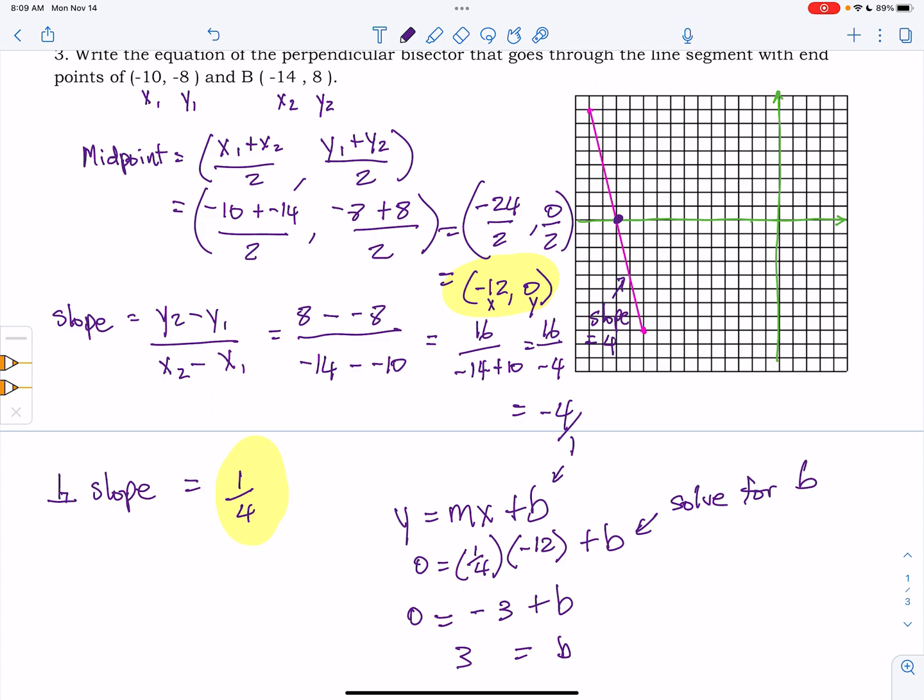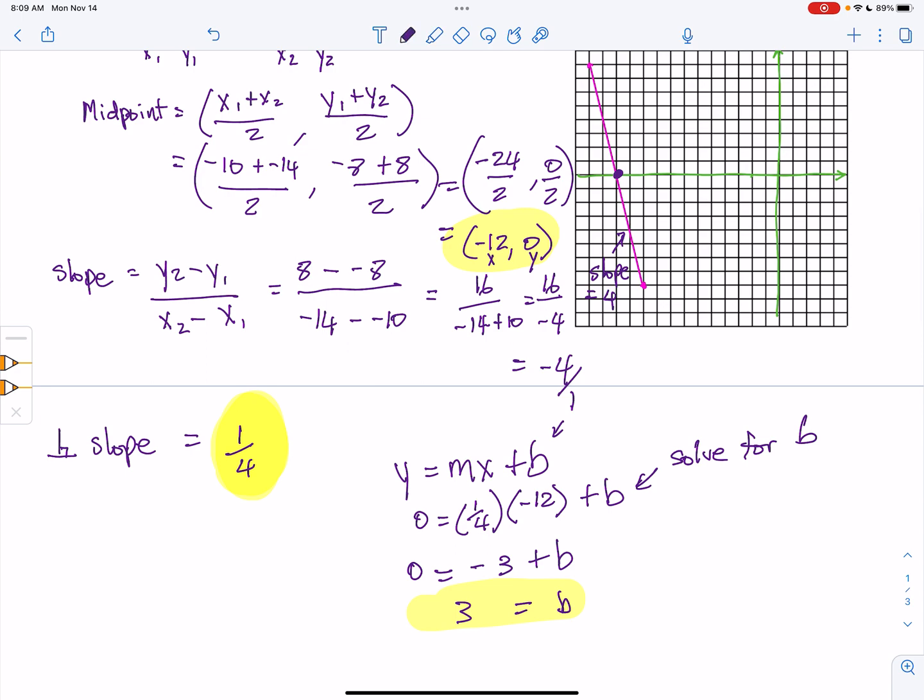Once you have that b is equal to 3, and we have the slope as 1 fourth, now we can just plug it in to our final equation, y equals mx plus b. We plug in the m, which is 1 fourth, and the b, which is 3. And we get that y is equal to 1 fourth x plus 3.